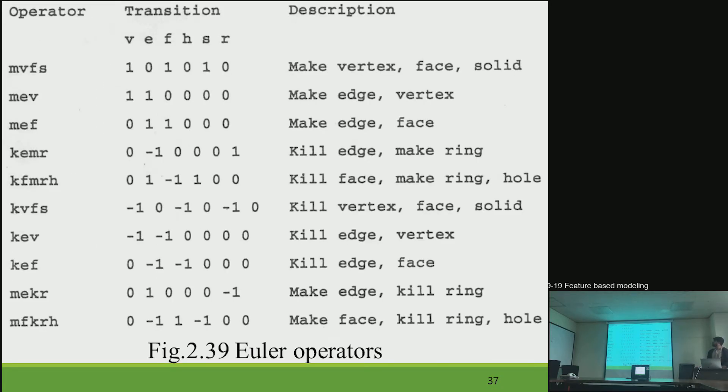And I will explain all the Euler operations. There are different kinds of Euler operations. You can say it as low-level language like assembly. Here on the left side is the operator. And the translation shows ones and zeros. And the last we have description. Description and operators are according to, like MVFS means make vertex-face-solid.